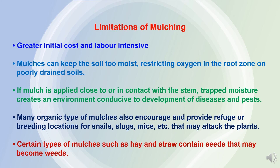Limitations of mulches. Along with benefits, there are some limitations and drawbacks of using mulching. In mulching, there will be a greater initial cost and it is a labor-intensive job. Mulches can keep the soil too moist, restricting oxygen in the root zone on poorly drained soils, so in case of mulching we have to control the irrigation supply as per the situation and requirement of the crop. If mulch is applied close to or in contact with the stem, the trapped moisture creates an environment conducive to development of diseases and pests. Because of covering of the soil and humid conditions and high moisture, there may be development of diseases and pests. Many organic types of mulches also encourage and provide refuge or breeding locations for snails, slugs, and mice, which may damage and attack the plants and crops.